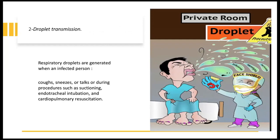Secondly, droplet transmission — also relevant in COVID. The infection is transmitted to others through coughing, sneezing, or even talking with an infected person if the safe distance of 1.5 meters is not maintained. What personal protective equipment is required for droplet precautions? A water or fluid-resistant gown, non-sterile gloves, surgical mask, and face shield or goggles. This is the standard required PPE for droplet transmission, plus a well-ventilated private room.